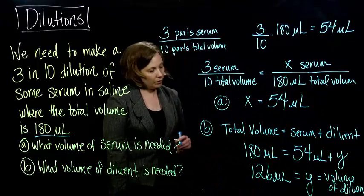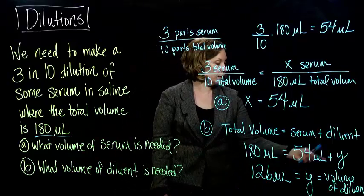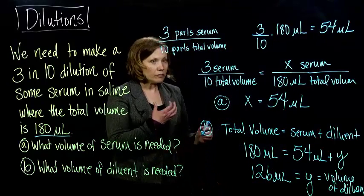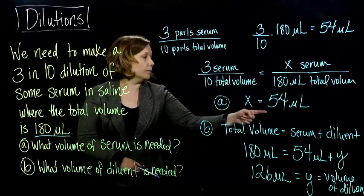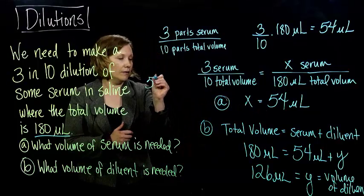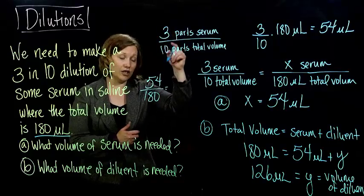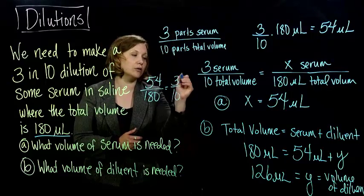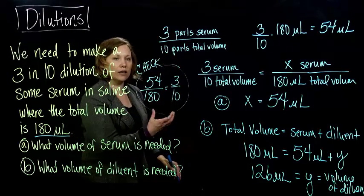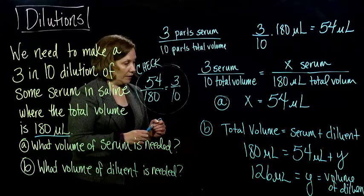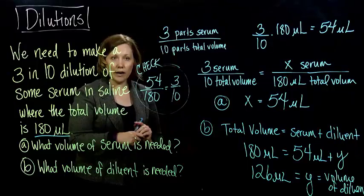You can see that written, oh, you probably can't see it written down in the corner. So we have 126 microliters of diluent and 54 microliters of serum. And you could certainly check that. If we did it correctly, when we do the 54 and the 180, we should get the same ratio we had up there. And sure enough, if you reduce the fraction, we do. So you can always check it. You can always check your dilutions to make sure that they make sense. So that is it for this example. Let's try another one.